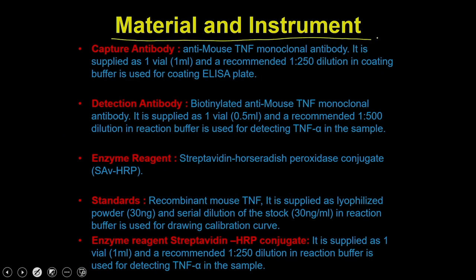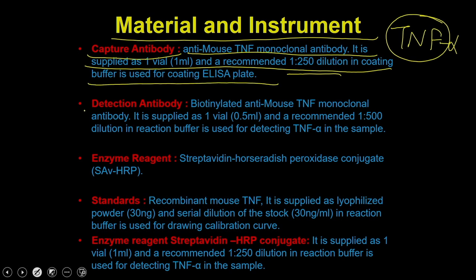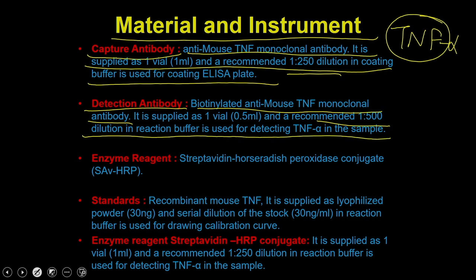Let us see the materials required. First, you need a capture antibody — in this case, anti-mouse TNF-alpha monoclonal antibody at 1:250 dilution in coating buffer for an ELISA plate. Then you need a detection antibody: biotinylated anti-mouse TNF-alpha monoclonal antibody at 1:500 dilution in reaction buffer. Then you need the enzyme substrate: streptavidin-horseradish peroxidase conjugate as the detection system, and a mouse TNF-alpha standard for the standard curve.